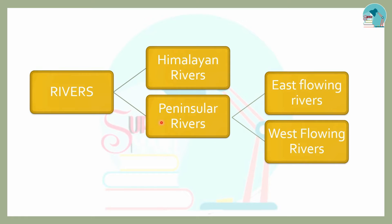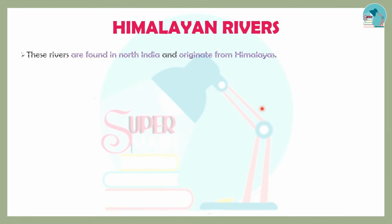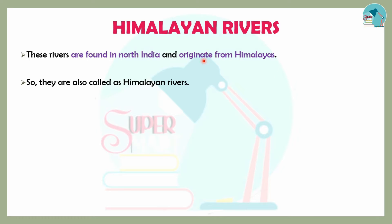Starting with the Peninsula Rivers, we have East flowing rivers and West flowing rivers. Now let us look at the Peninsula Rivers and the Himalayan Rivers. The Himalayan Rivers originate from North India and the Himalayas — that is why they are called Himalayan Rivers.